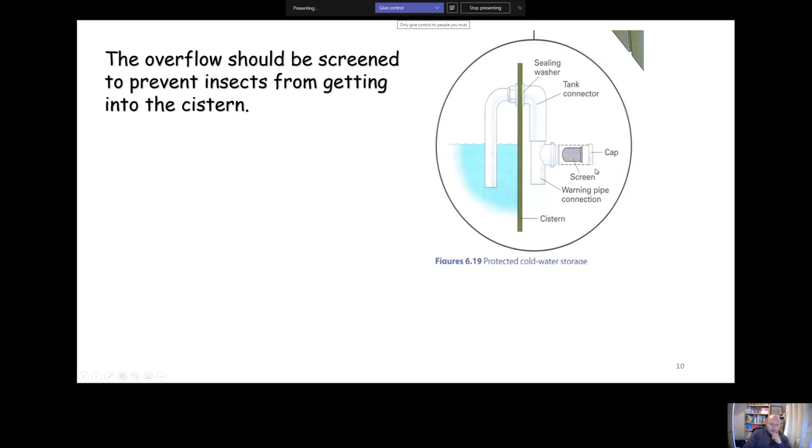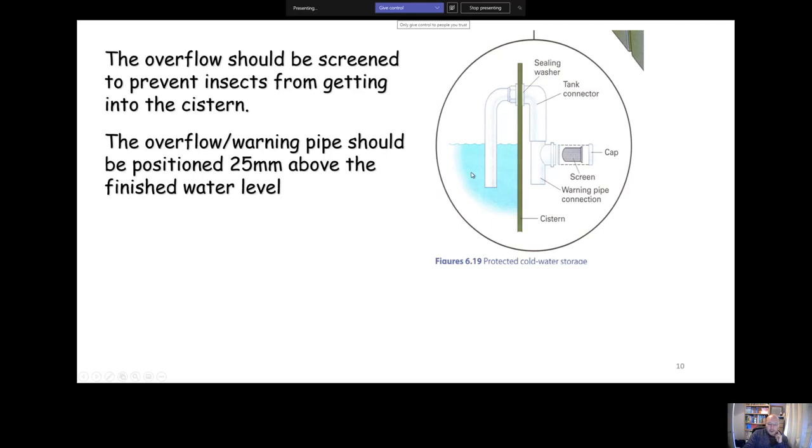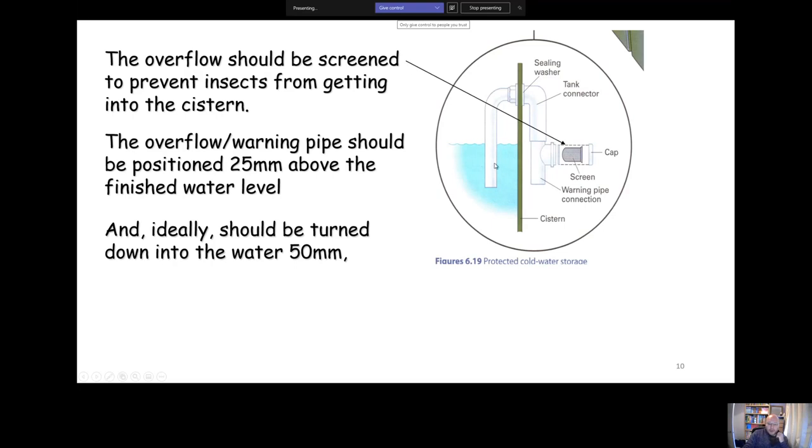Overflows need to be screened. That prevents insects or dust being blown into the system. Another thing that they do to prevent wind blowing dust through is they turn it down into the water. They call it a dip pipe. That helps prevent things being blown up the overflow. The key size for overflows, and actually a key size in general for cold water storage systems, is 25 mil. The overflow pipe should be positioned 25 mil above what's known as the finished water level.